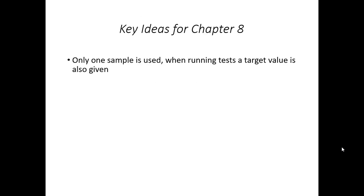Some of the key ideas in chapter 8 are, well, only one sample will be used and when we run test, we will also be given a target value. And so the results from our sample will be compared to the target value. All of the inferences require the use of tables. And so in this chapter, we'll need to be familiar with the normal distribution table, the t-distribution table, and the chi-square table.